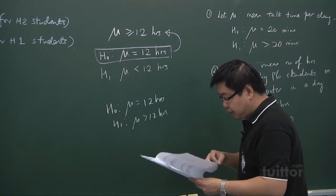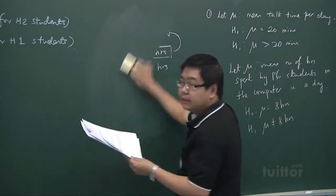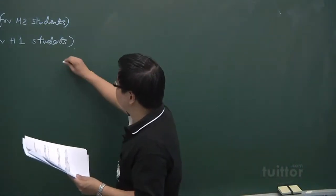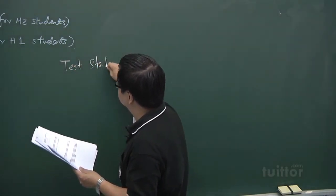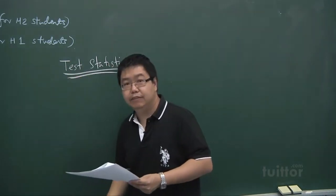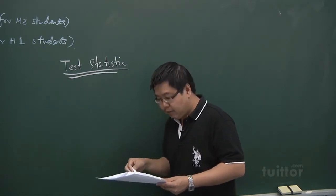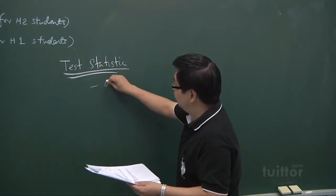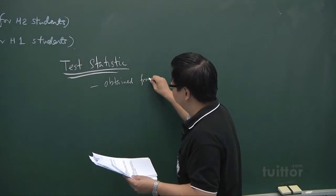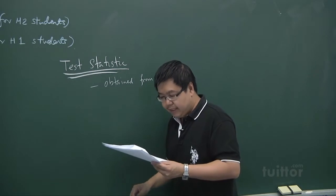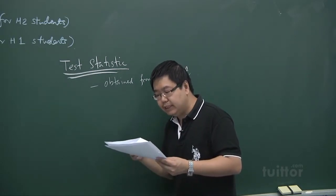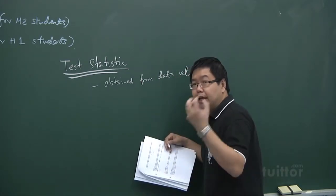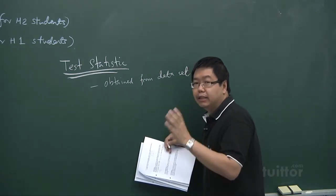Now let's look at some more definitions important for hypothesis testing. The first concept is the test statistic. The test statistic is defined as the value obtained from the data set, which is then compared with the statistical distribution to determine whether the data set differs from what is expected under the null hypothesis. It depends on what you obtain from the sample, and you use these values to determine whether the null hypothesis is true or false.